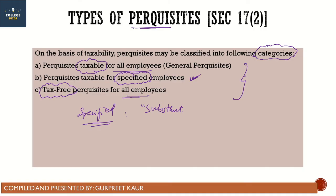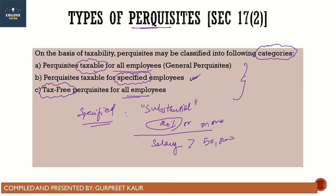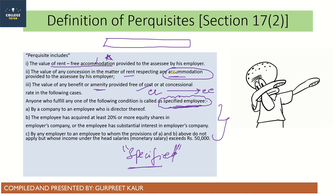Specified employees are those who have a substantial interest in the company — meaning they have acquired at least 20% or more of the equity shares of the company. The first condition is: they are a director of the company. The second condition is: they hold 20% or more equity shares, meaning they have substantial interest.